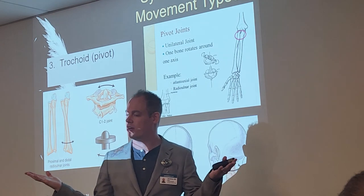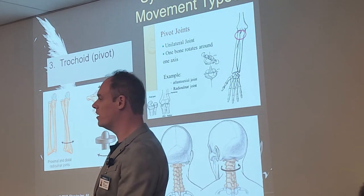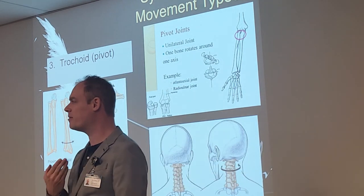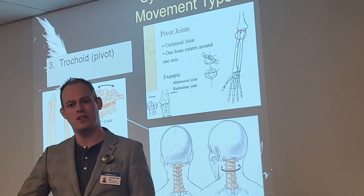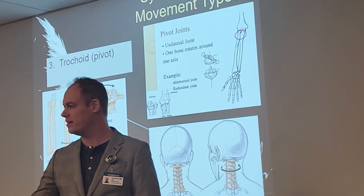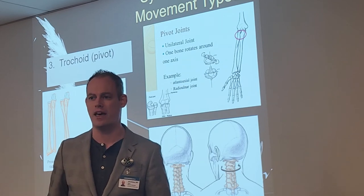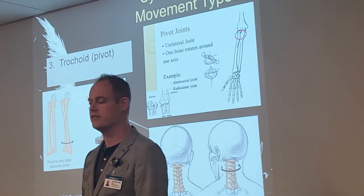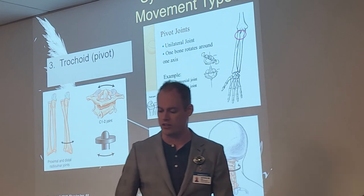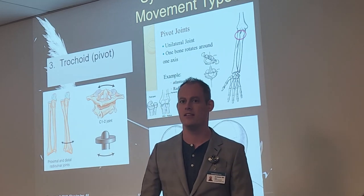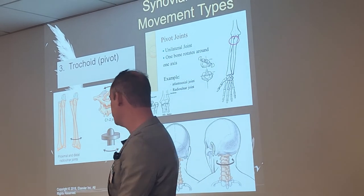The pivot joint also goes by the name trochoid joint. We talked about the neck, but we also have a pivot joint in our forearms when we rotate our arms. Anytime you're turning — turning your head, arms, or legs — that's a pivot or trochoid joint.